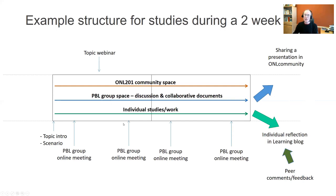We strongly recommend two meetings a week, though when and how you meet is up to each group to decide. We'll also give you a webinar with more information about the topic and perhaps some new ideas. At the end of the two weeks, your group will produce a presentation in some form — a film, an animation, a podcast, or some other format — and present it to the whole community to hopefully get feedback. Individually, you'll write a reflection on your blog and receive feedback and comments from peers and some of the facilitators.